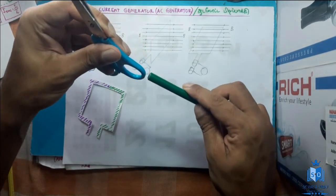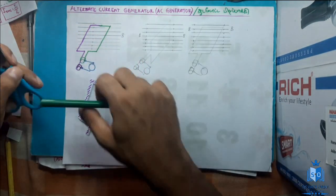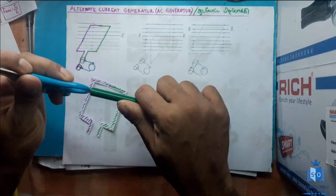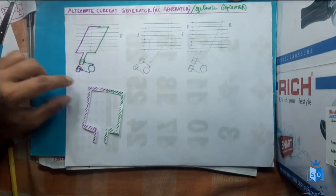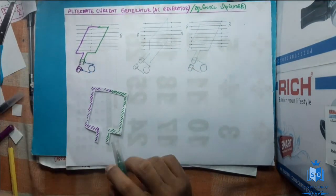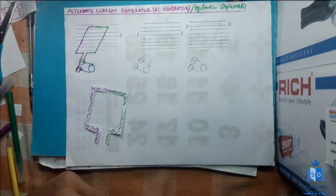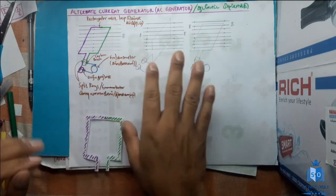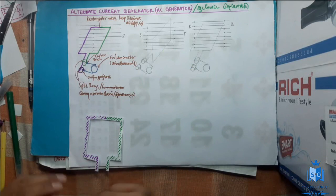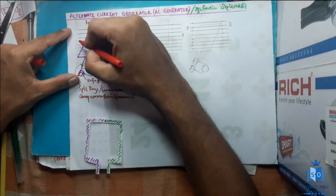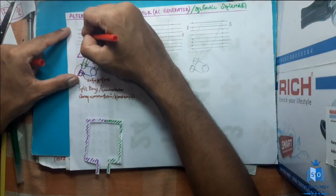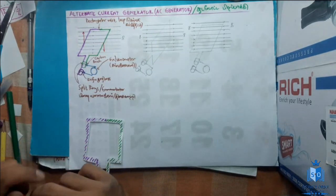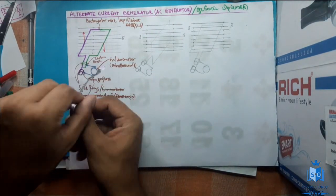The brush will always be in contact with the commutator or the split rings so that it gives a very good connection. This is going to be a galvanometer. Let us mark the parts first. Now we have marked all the parts.